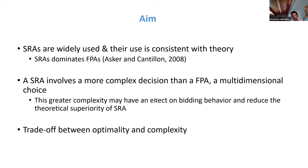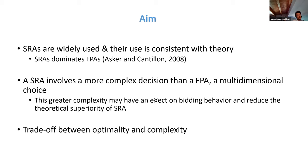However, we argue that a scoring rule auction involves more complex decision-making because it is a multidimensional choice, and this greater complexity may introduce behavioral bias that could reduce or even destroy the theoretical superiority of the scoring rule auction. The aim of this paper is to study the trade-off between optimality — the theoretical optimality — on one end, and complexity and behavioral bias on the other.